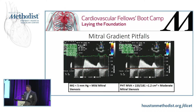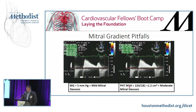Here's an example: you get your continuous wave Doppler profile, trace that out, and get a mean gradient of 5 — mild mitral stenosis, no big deal. But while we're here, why don't we also check using pressure halftime. We take 220 divided by the pressure halftime and now we get 1.2 centimeters squared, which would be moderate mitral stenosis. So one reading says mild, another says moderate — what gives?